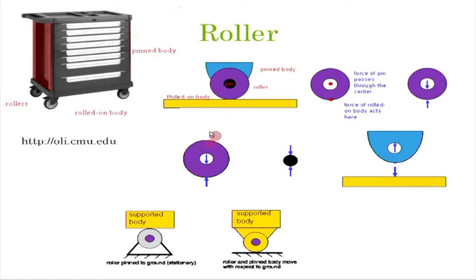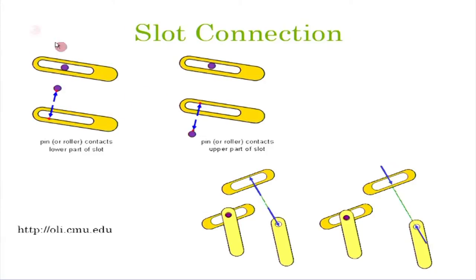This figure demonstrates how various connections constrain degrees of freedom and what support reactions they provide. A roller and a slot connection are among those shown. These slides will all be available to you, so you can explain to your students in greater detail what each particular connection means.